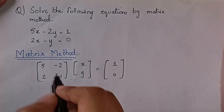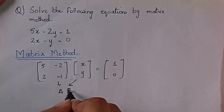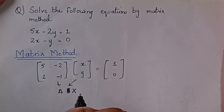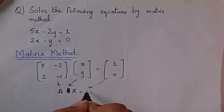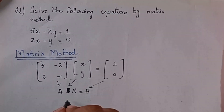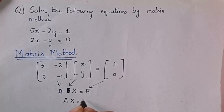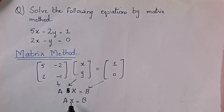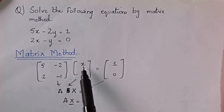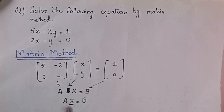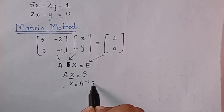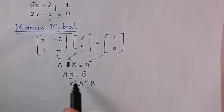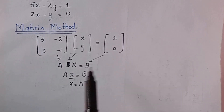Now we will name these matrices. We will call the coefficient matrix A, the variable matrix x, and the constants matrix B. So the equation becomes Ax = B. But we need to find x, so we send A to the other side. That means x = A inverse times B. We need to find A inverse, and we already have the B matrix.